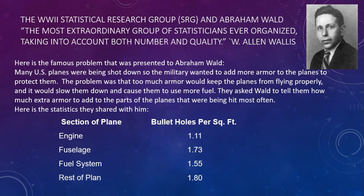Here was the famous problem presented to Abraham Wald. Many U.S. planes were being shot down, so the military wanted to add more armor to the planes to protect them. The problem is, if you add too much armor, the planes don't fly properly — it takes more fuel and slows them down. So they asked Wald to tell them how much armor to add to the parts of the plane that were being hit the most, and they shared statistics with him showing the section of the plane and the bullet holes per square foot.